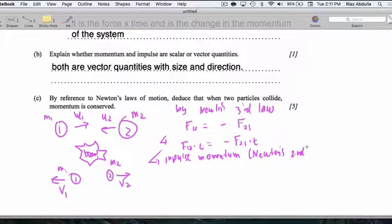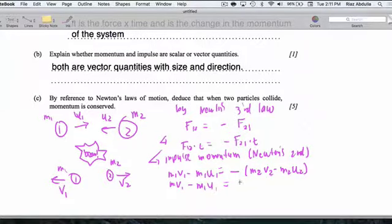we can write M1 V1 minus M1 U1 equals negative M2 V2 minus M2 U2. We're going to FOIL this out. So we'll get M1 V1 minus M1 U1 equals negative M2 V2 plus M2 U2.